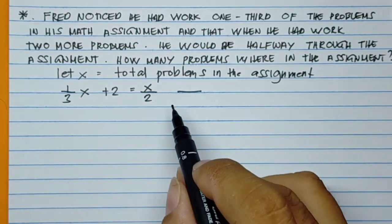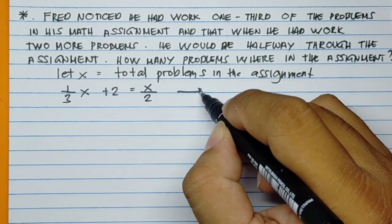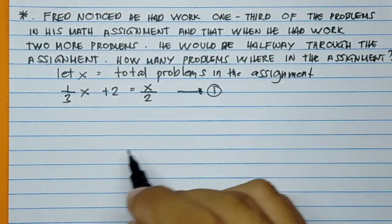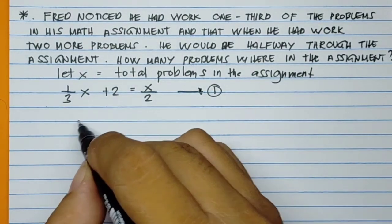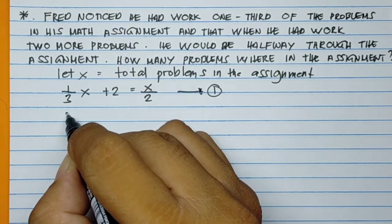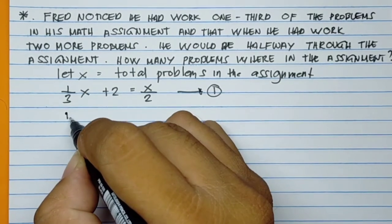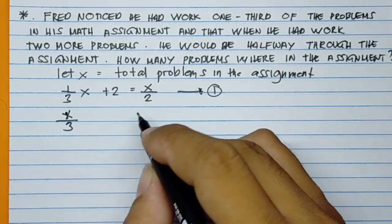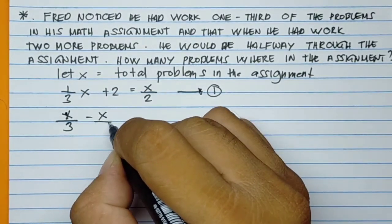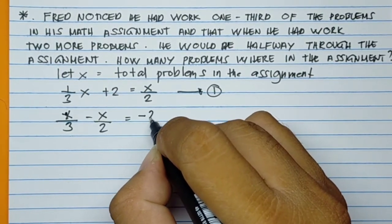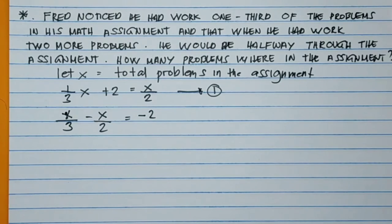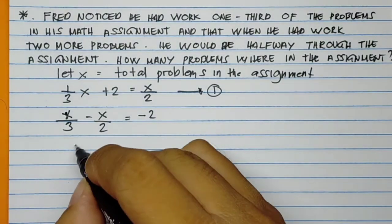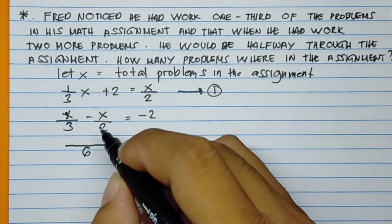So you derive the value of X from this equation. One-third of X, so you move here, X over 3 minus X over 2 is equal to negative 2. You just transpose.